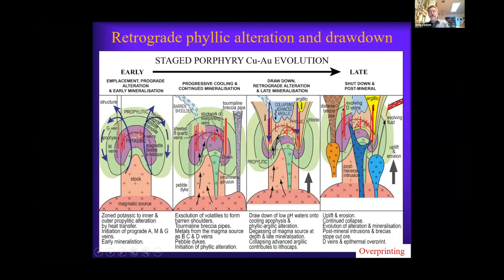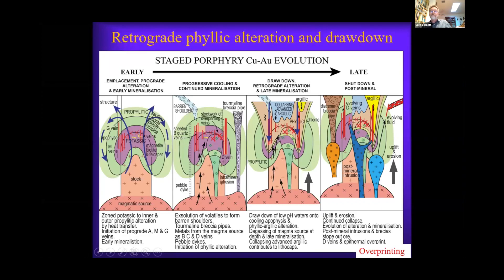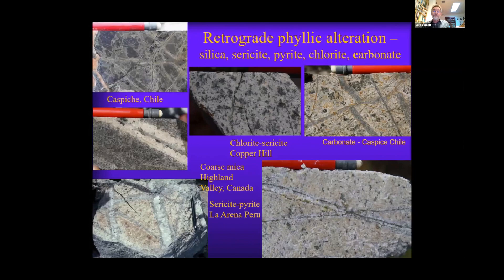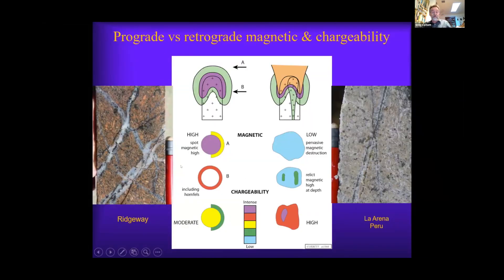As this cools, those circulating cells reversed and, under drawdown, those hot acid fluids collapsed upon our pre-existing porphyry, particularly down the margins. Dave Lowell's model would come through here to produce our overprinting phyllic alteration. Phyllic alteration destroys the earlier minerals and produces silica, sericite, and pyrite — the magnetite from the earlier event is destroyed and abundant pyrite is deposited. So when we're using magnetic imagery to explore, we've got to remember that our prograde porphyry will be magnetic, but our retrograde porphyry will have a variable magnetic signature from that magnetite destruction, yet it will be chargeable because of all that pyrite.